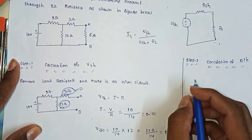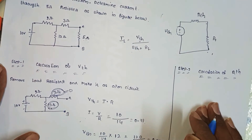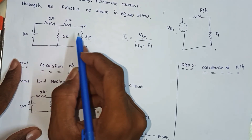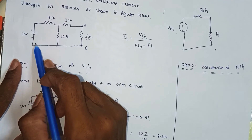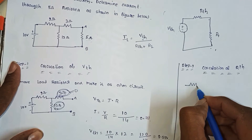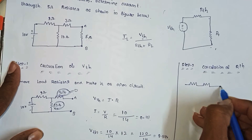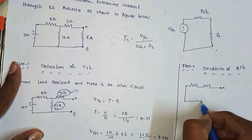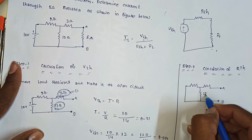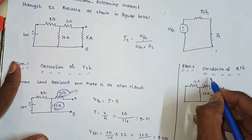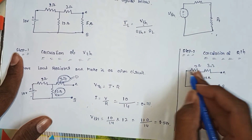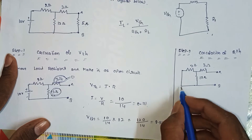Step 2: calculation of RTH. Deactivating all the sources — the voltage source is replaced as a short circuit. We redraw the circuit: the 10-volt source is short-circuited, giving us 12 ohms, 2 ohms, and 3 ohms. We have 3 ohms in parallel with 12 ohms.